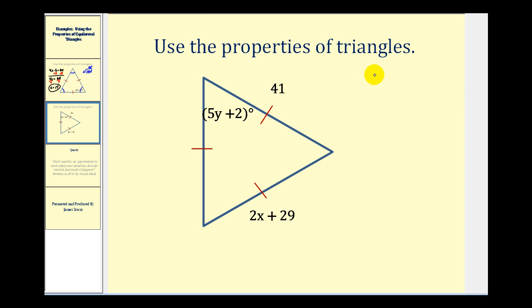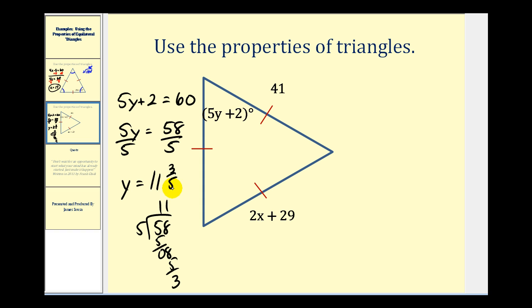So 5y plus 2 must equal 60. So we'll subtract 2 on both sides. That'll give us 5y equals 58. Divide both sides by 5. This isn't going to come out quite as nice as the previous example. 58 divided by 5. This will be 11 and 3 fifths, or as a decimal it would be 11.6.